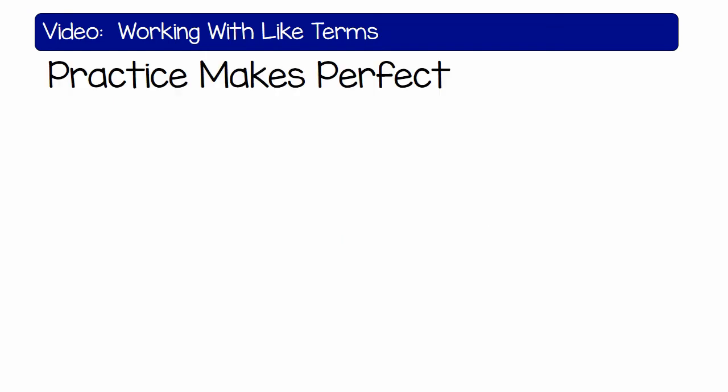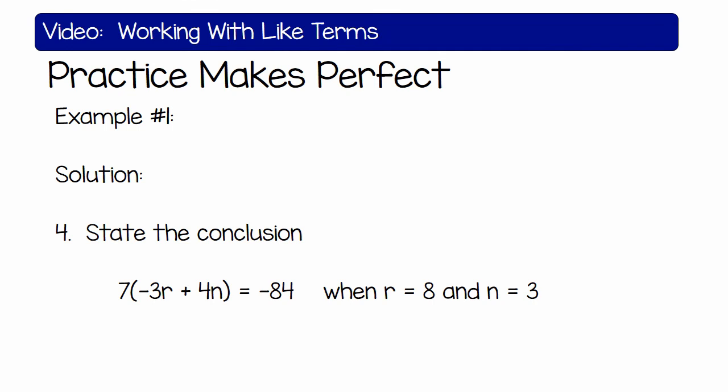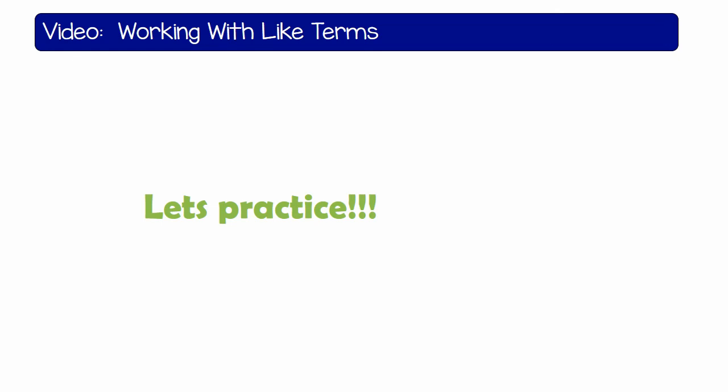Now state your conclusion: 7 times negative 3r plus 4n is negative 84 when r is equal to 8 and n is equal to 3. Now it's your turn. Let's practice.